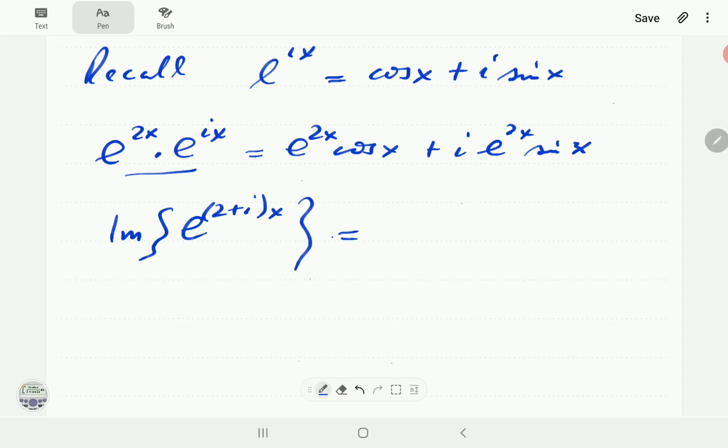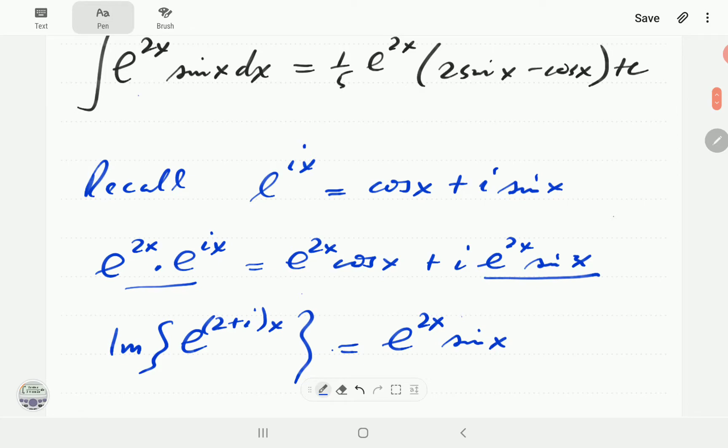If we do the imaginary part, that's just going to pick out this term here. It's going to be E to the 2x sine x, which is exactly the term we are trying to integrate there.